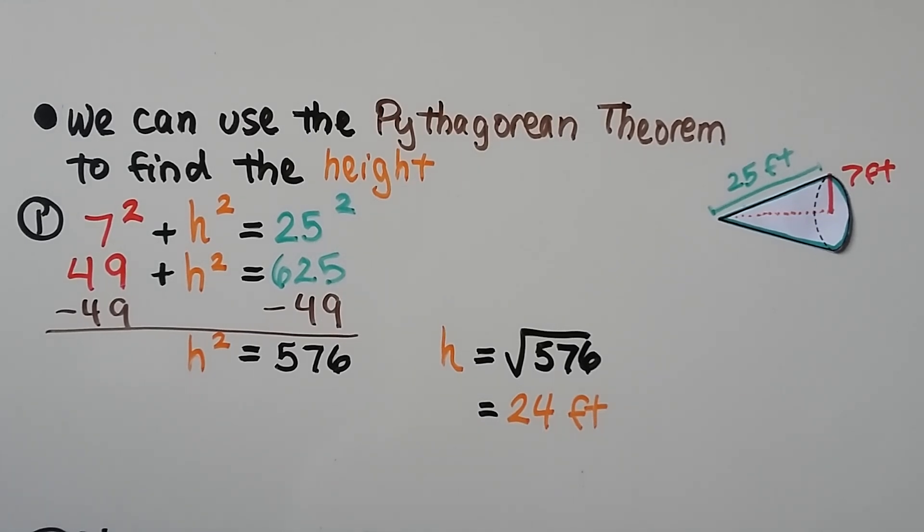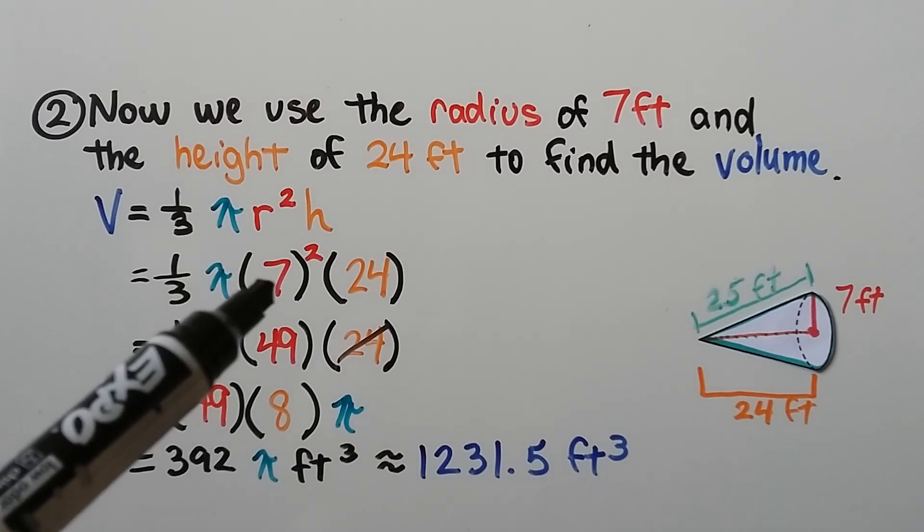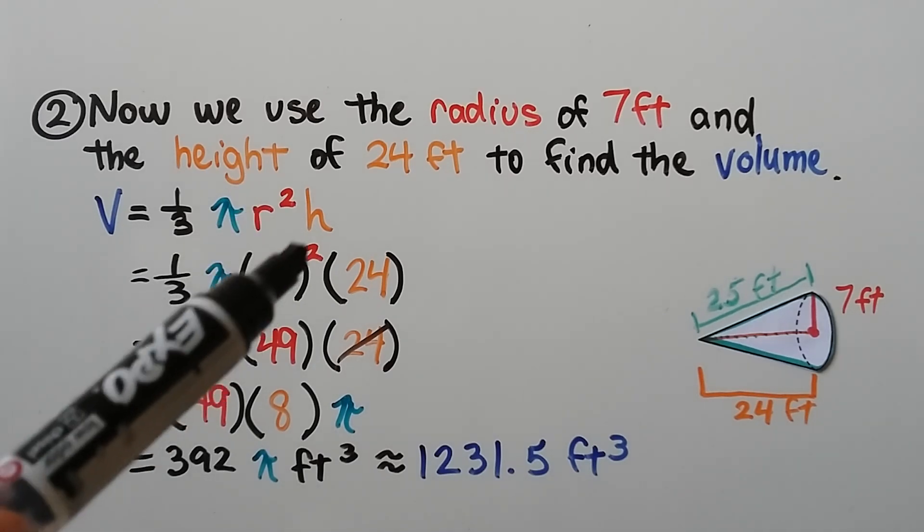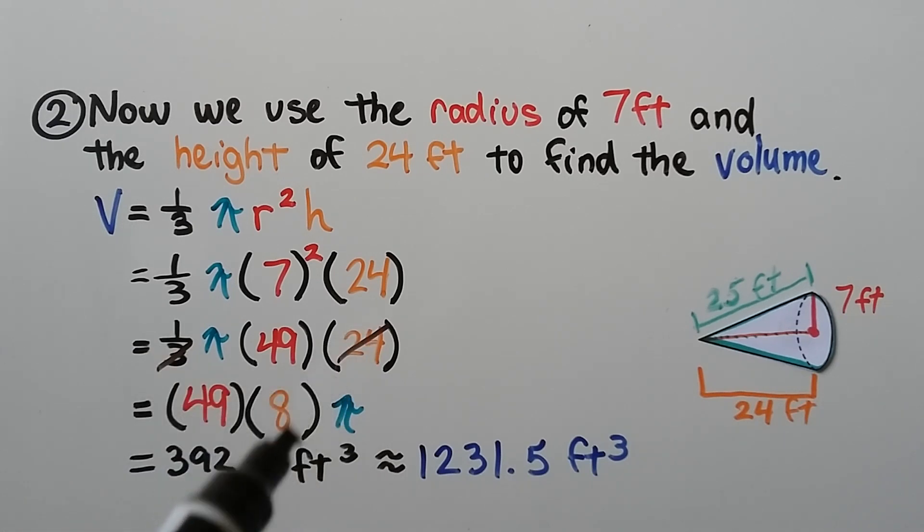Now that we know the height, we can find the volume. We use the radius of 7 feet and the height of 24 feet to find the volume. Using our formula for the volume of a cone, we put in 7 for our radius, so we have 7 squared, which is 49. We can reduce using the 3. Our fraction is gone, and that becomes an 8. 49 times 8 is 392. So we have 392π feet cubed, which, using our calculators, is approximately 1,231.5 feet cubed.